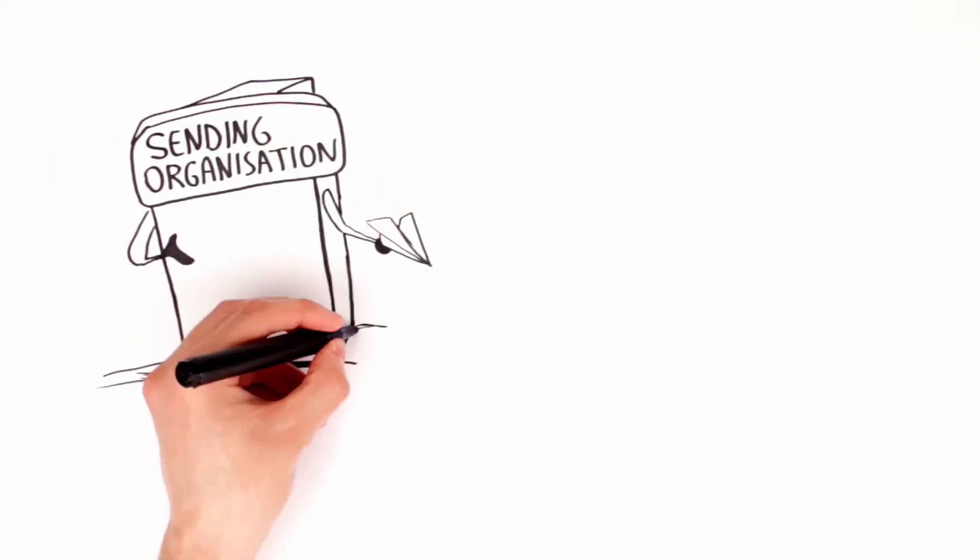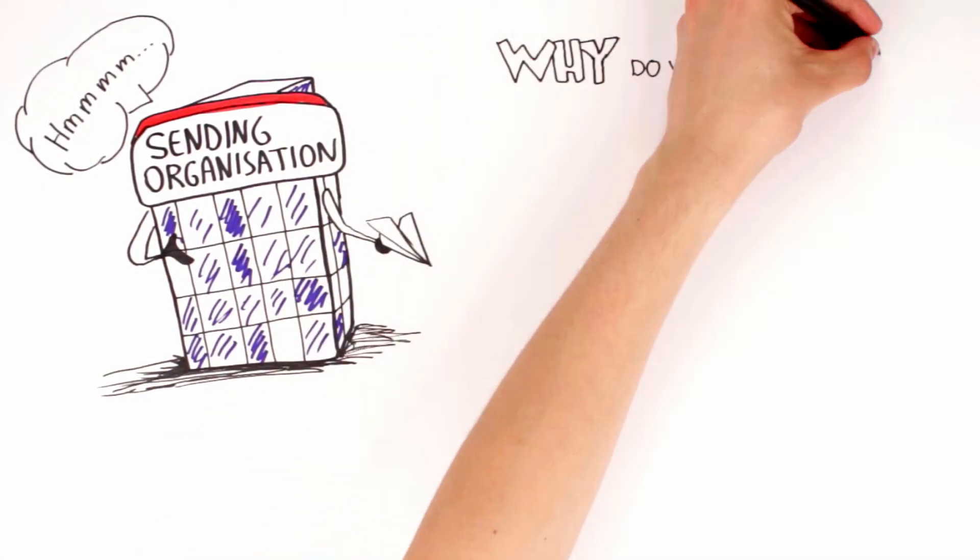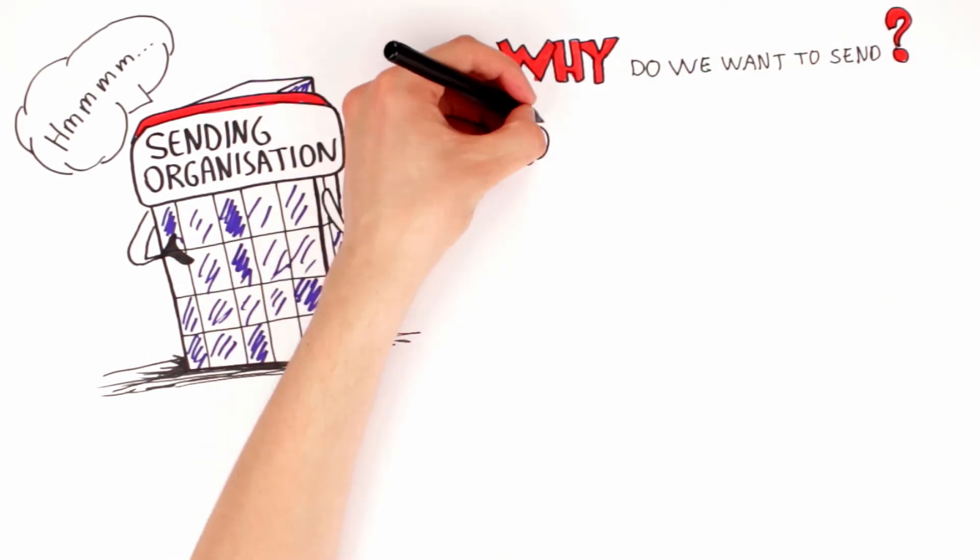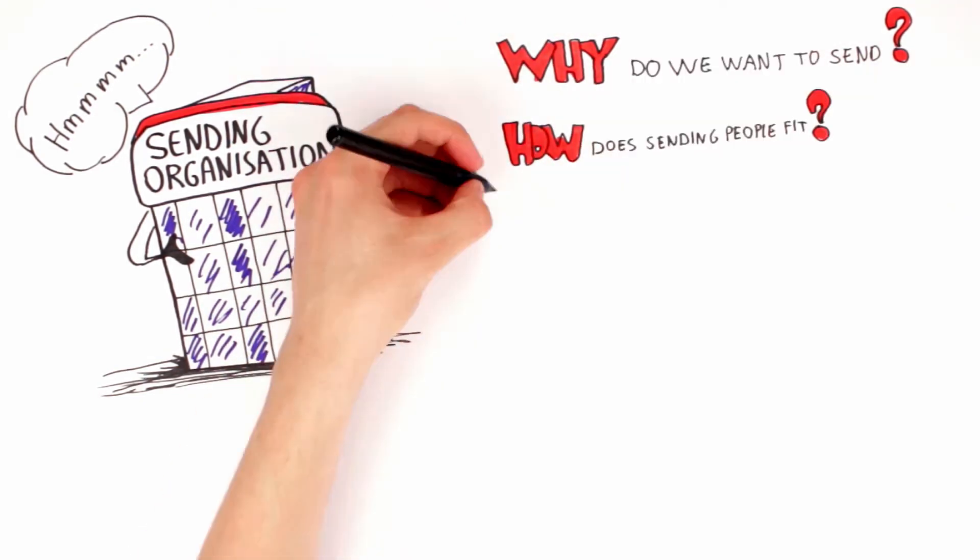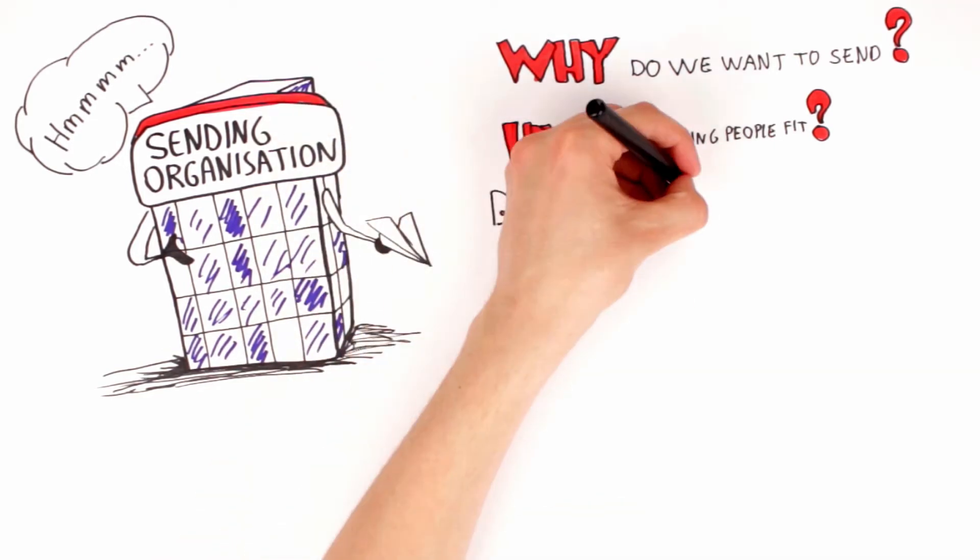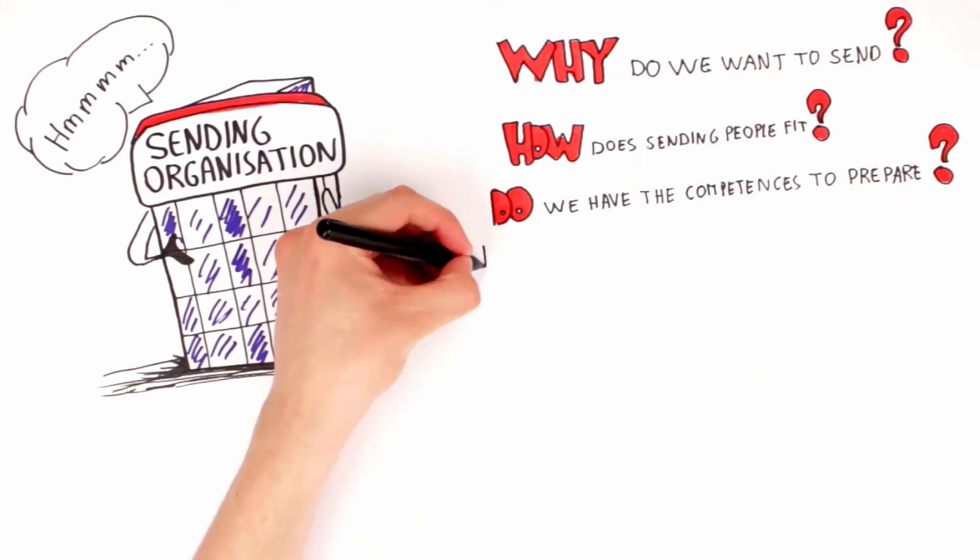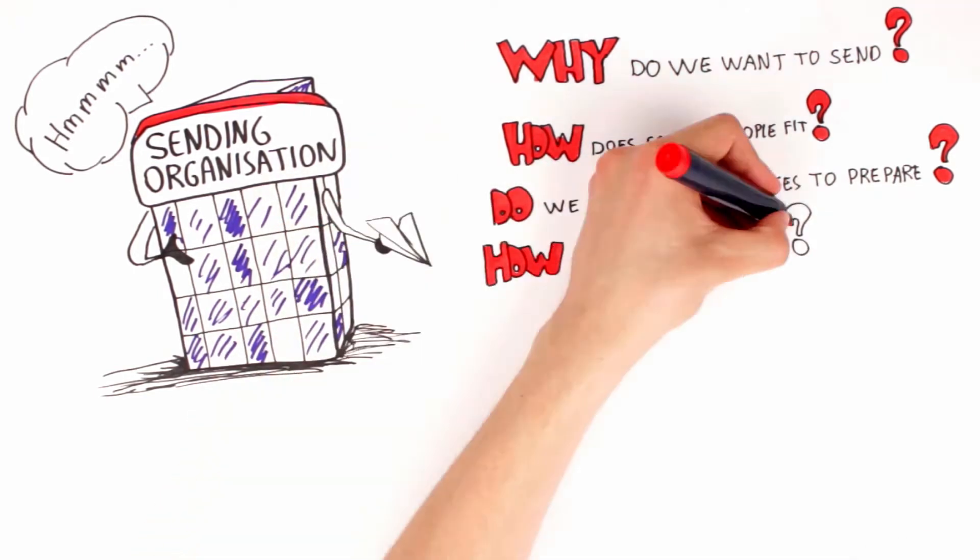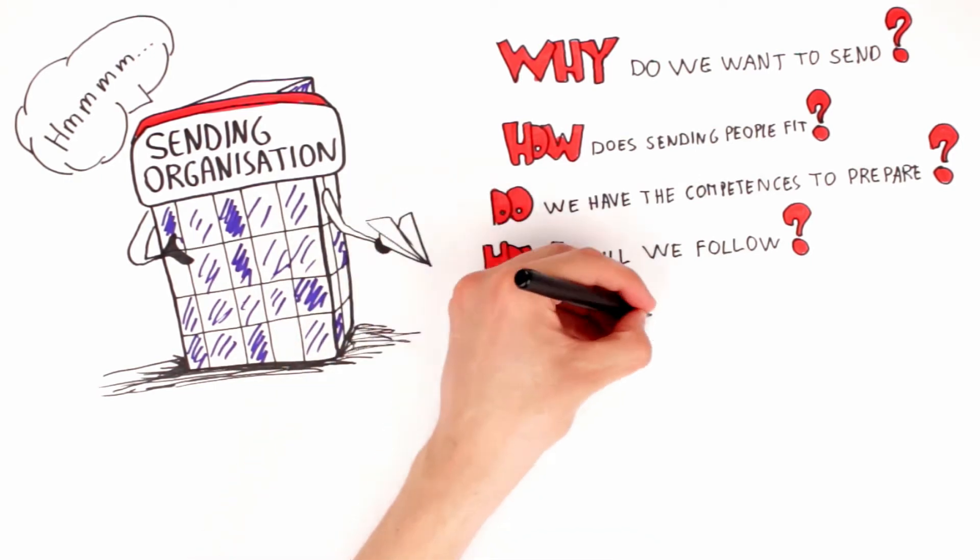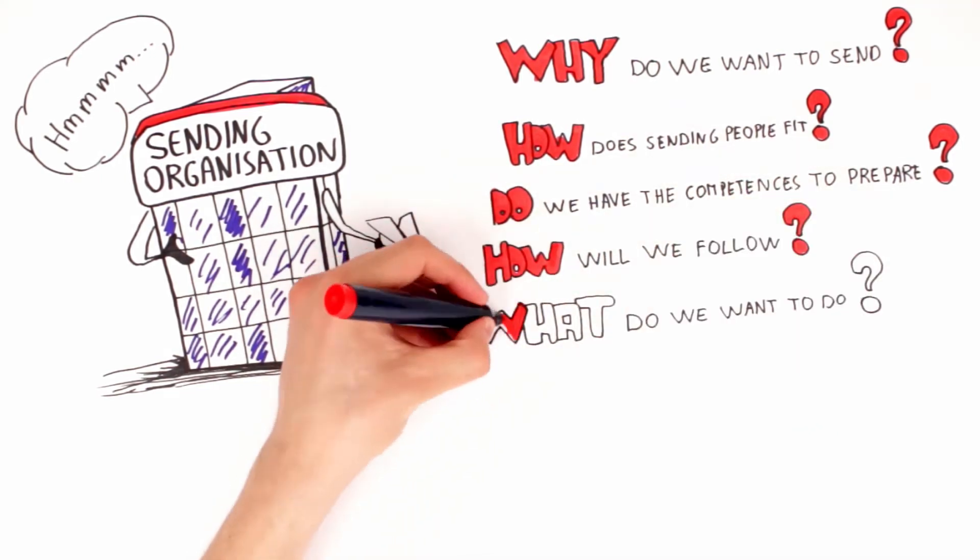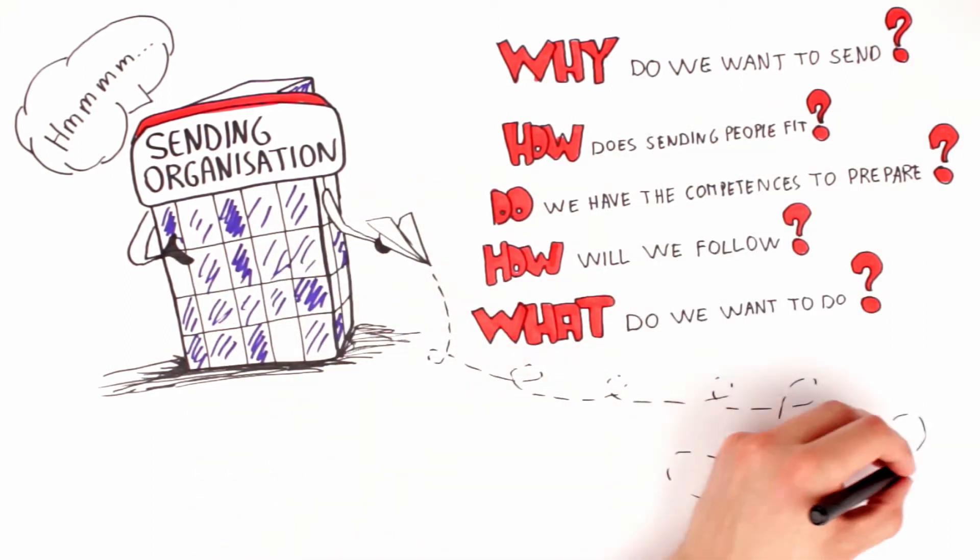For a sending organization, reflect on why do we want to send young people on European Voluntary Service, how does sending people fit into our other work objectives and schedule, do we have the competences, capacity and staff to prepare our young people to go on EVS, how will we follow the volunteer throughout all stages of the project, what do we want to do with EVS volunteers who come back, how will we give value to their experience, use their new competences and give opportunities to these young people.